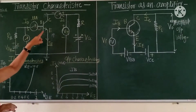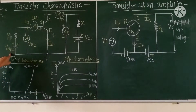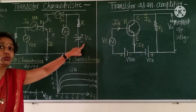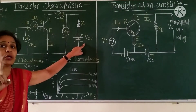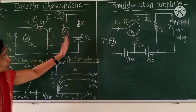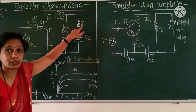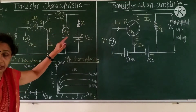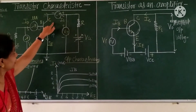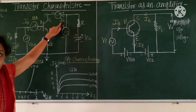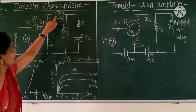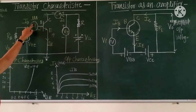Therefore, the base emitter junction is forward biased due to VBB, and the base collector junction is reverse biased due to VCC. In the output section, we have connected the resistance R. VCE, means voltage between collector and emitter, is measured by this voltmeter, and the current IC, the current flowing through the collector, is measured by this milliammeter.